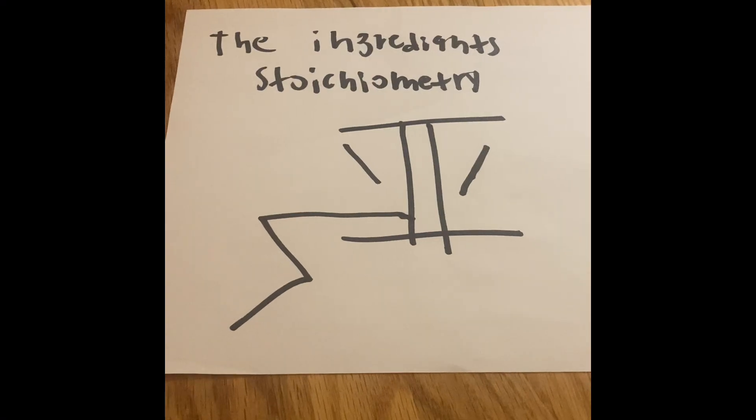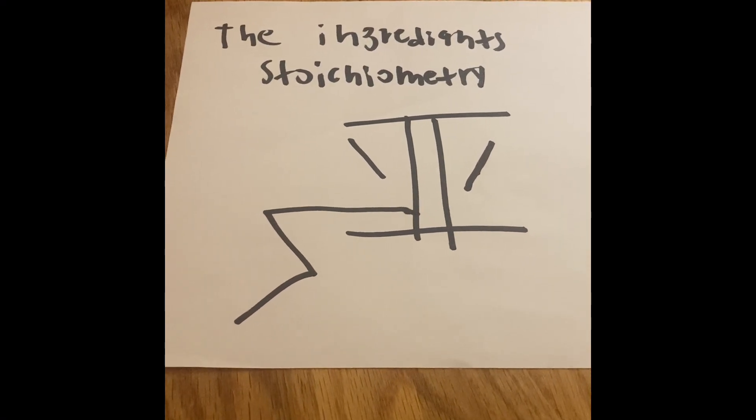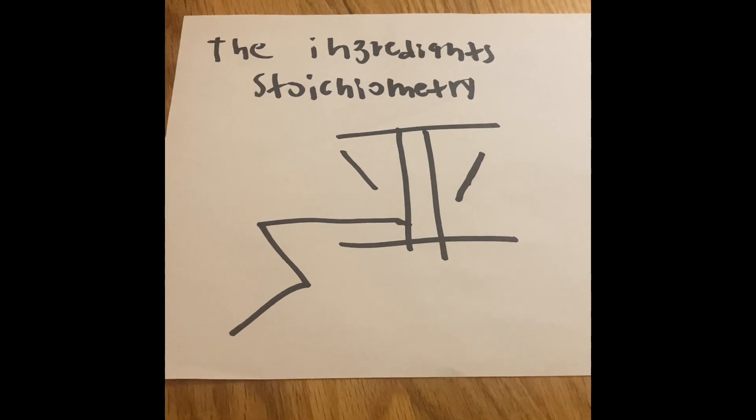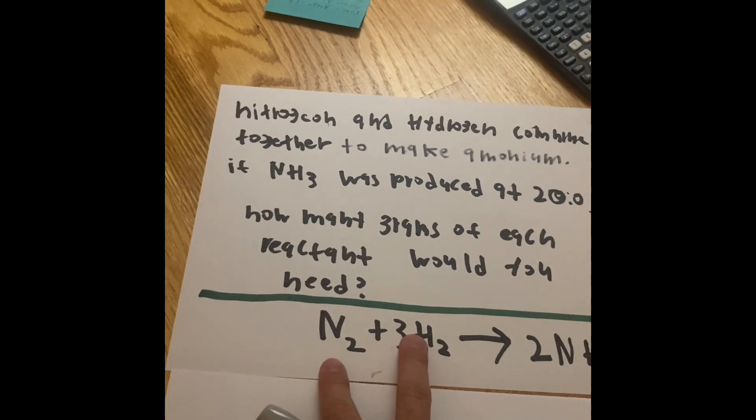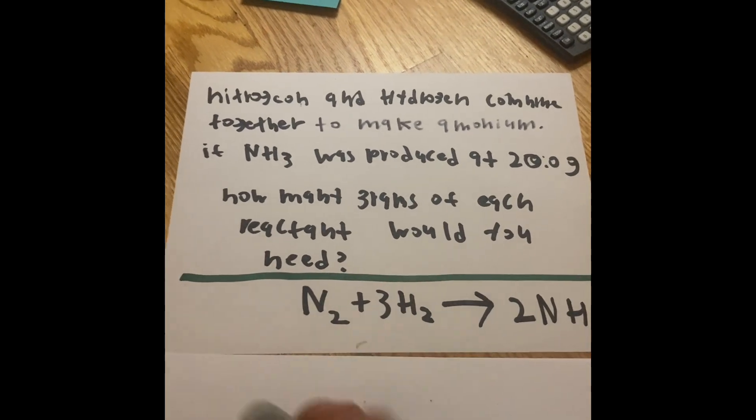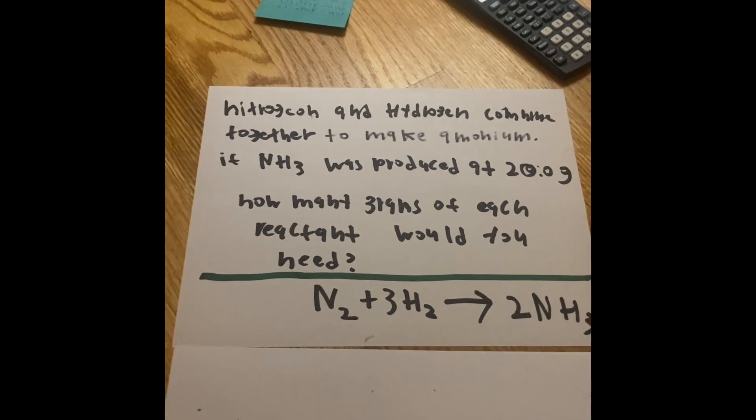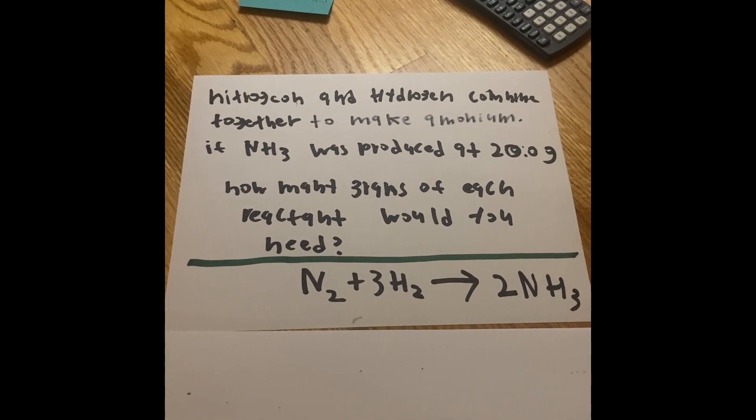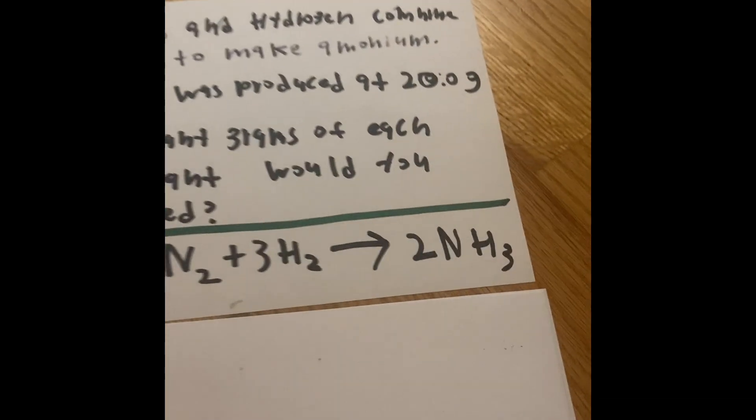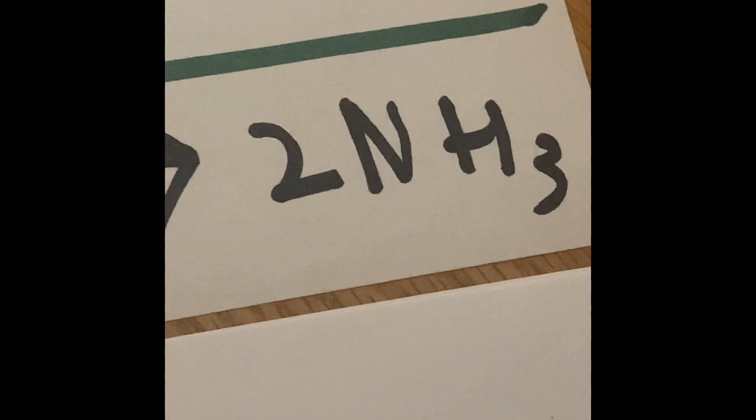So let's see what happens, how we can show that. And here is our question. Nitrogen and hydrogen combine together to make ammonium. If NH3 ammonium was produced at 20 grams, how many grams of each reactant would you need in order to make exactly 20 grams of NH3?